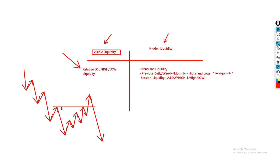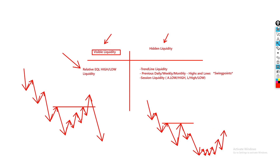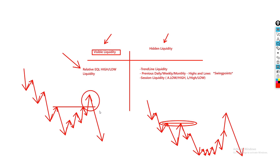If you see relative equal highs left untouched, you can use that as a target for your buys — you know there's liquidity up there and a possibility price is moving up to target it and reverse. But most often, you'll get the inducement scenario where price moves a little away, then blows through. So you can use equal highs and lows both as targets and as warnings that a POI nearby may fail. That covers visible liquidity — the equal highs and equal lows.